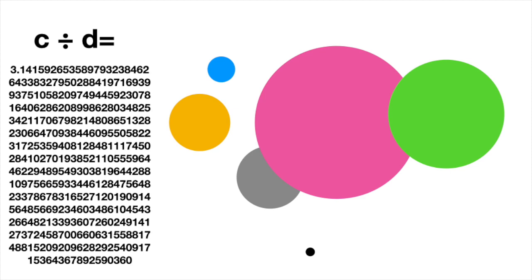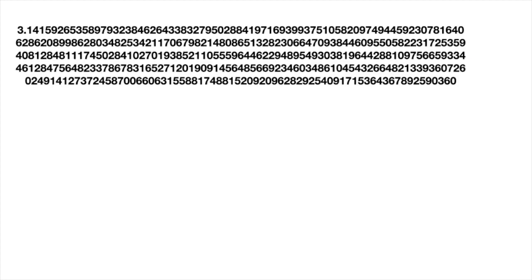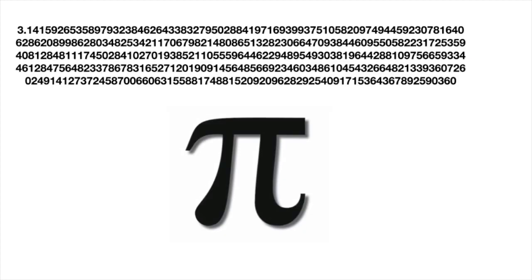No matter what size circle you have, whether it's giant or tiny, if you divide the circumference by the diameter, you will always get this number. And this number is known as pi.